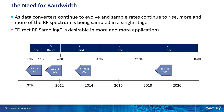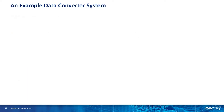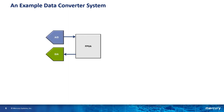So now we have an application that requires a high bandwidth converter. Let's see what the system block diagram looks like. The core of the system are the data converters and the FPGA to process the data. I'm going to focus on the A to D converters, but every part of the technology we look at today is applicable to the D to A converters also.